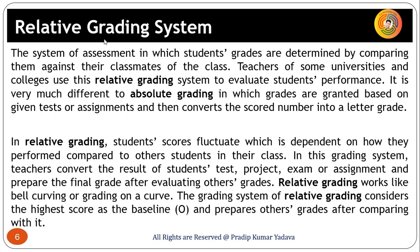Now talking about relative grading: it is a system of assessment in which students' grades are determined by comparing them against their classmates. Student scores fluctuate depending on how they perform compared to other students in the class. Teachers convert test, project, exam, or assignment results and prepare the final grade after evaluating others' grades. Relative grading works like curving — the highest score is considered the baseline O, and other grades are prepared by comparing with it.